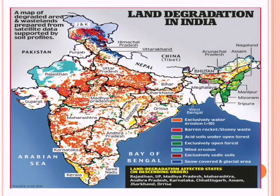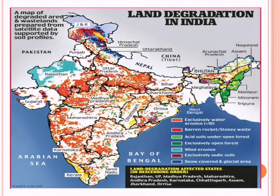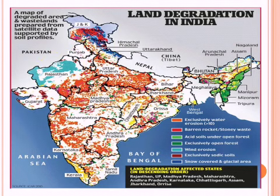In India, orange portions on the map show degradation due to water erosion. Red portions are due to stony and barren rocky waste. The green portion shows acidic soils due to forestry activity, and the blue portion shows wind erosion. Different factors cause land degradation and make it look like a desert eventually. Land degradation in India is a serious concern.